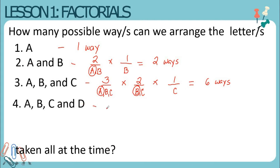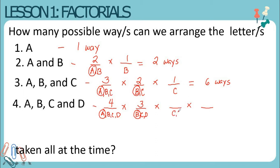Number four: letters A, B, C, and D. We have four letters to be selected, so let us draw four lines. On the first line we can select A, B, C, or D, so we have four options. If we have chosen letter A, you only have B, C, D to choose from — three options. Then if you have chosen letter B, you have C and D only — two options. If you have chosen letter C, the remaining letter is D — one option. Multiplying: four times three times two times one equals twenty-four ways to arrange A, B, C, and D taken all at a time.